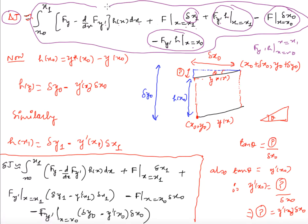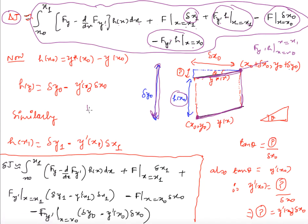Now I need to compute h(x₁) and h(x₀). Going back to the diagram: I have curve y and curve y*, where y* starts from the point (x₀ + δx₀, y₀ + δy₀). The quantity h(x₀) is y*(x₀) minus y(x₀), and δy₀ is the full vertical distance from y₀ to y₀ plus δy₀.